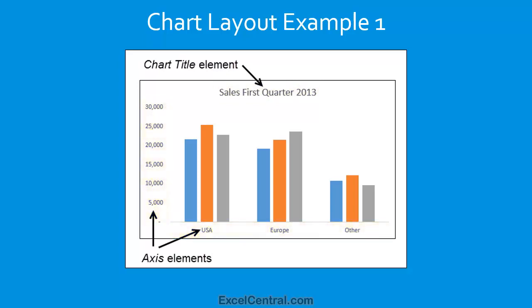Let's talk some more about the Axis. A chart normally shows category or non-numerical data along the Horizontal Axis, which is also sometimes called the X-Axis. The Vertical Axis normally contains numerical data and is also sometimes called the Y-Axis. The chart used in this lesson has the non-numerical region categories — USA, Europe and Other — along the Horizontal or X-Axis, and the numerical values along the Vertical or Y-Axis.